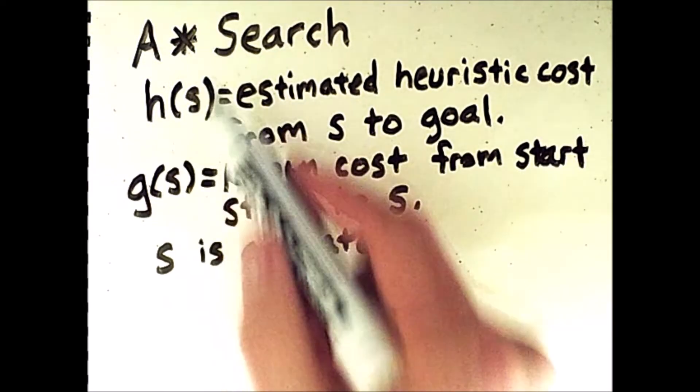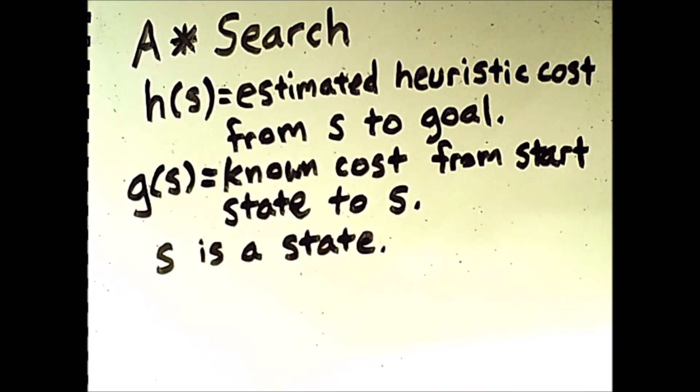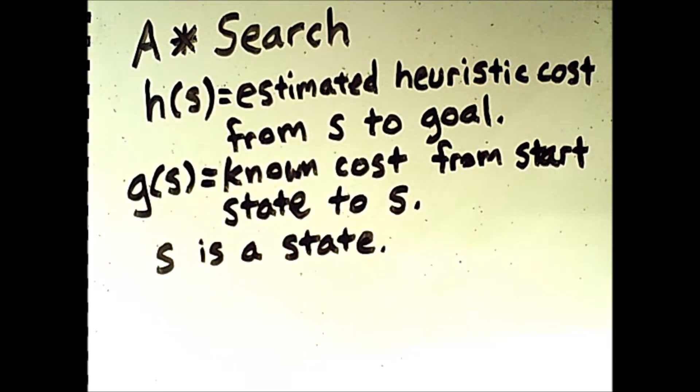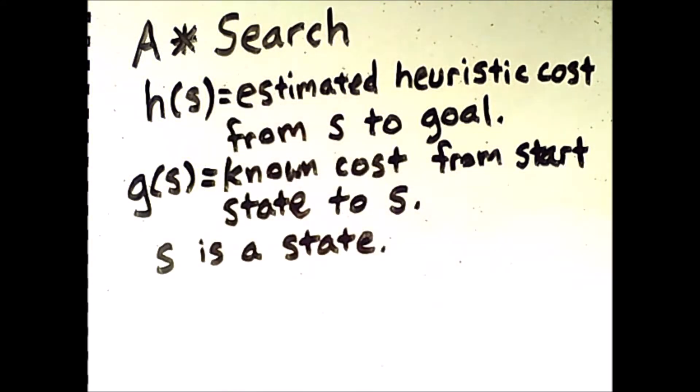So s is just some state. Now, using these two functions, I'm going to be able to apply A star search. A star search basically works the same way that uniform cost search does. Both algorithms use a priority queue, but in the case of A star search, the priority queue value of a state is the sum of these two values.